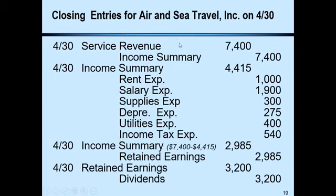The second closing entry closes all expense-related accounts — all expenses are credited to close them, with a debit to the income summary account. The third closing entry closes the income summary account into retained earnings. In the case of profit — for example, revenues of $7,400 and expenses of $4,450 — the entry is: income summary debit, retained earnings credit. In the case of loss, the entry reverses: retained earnings debit, income summary credit.